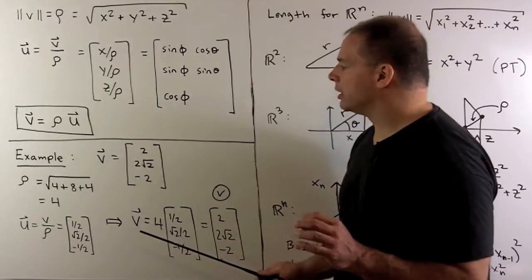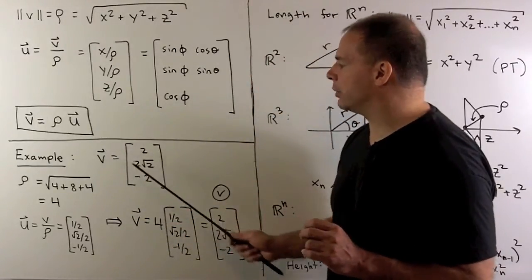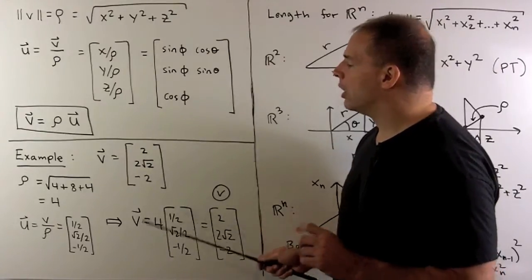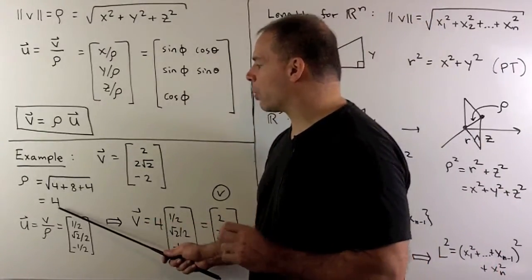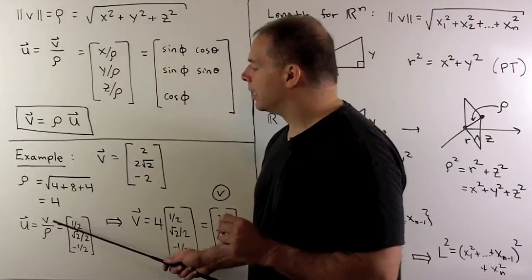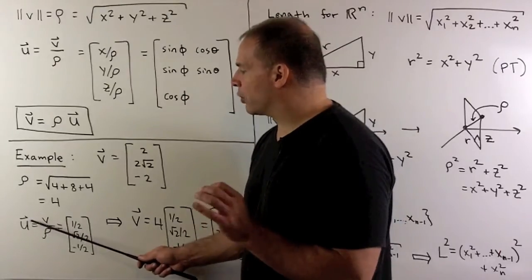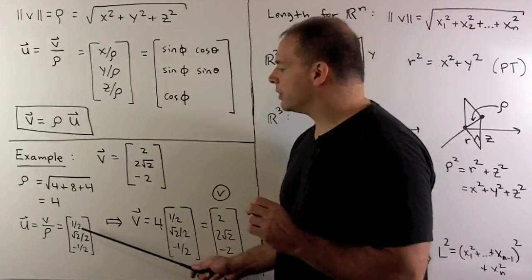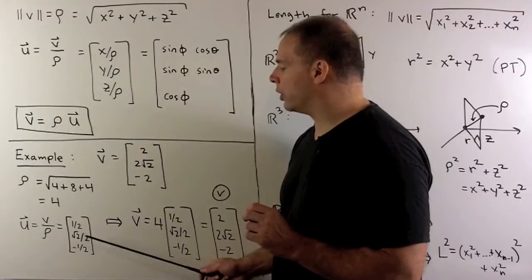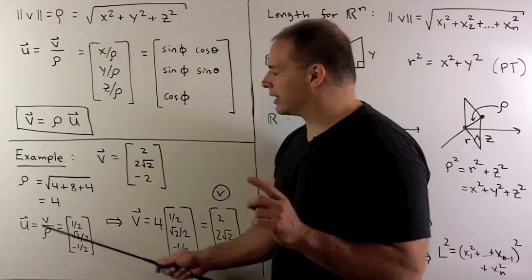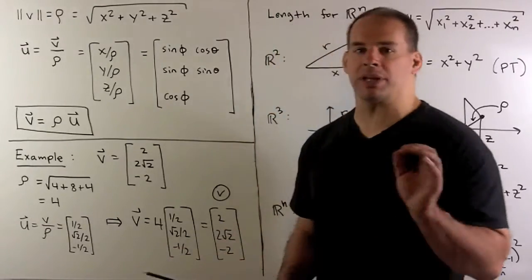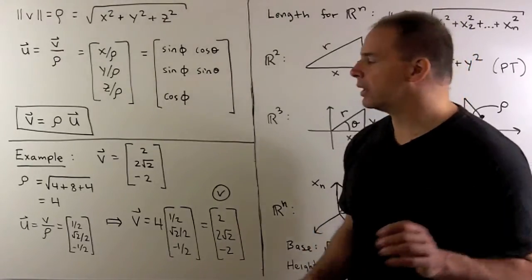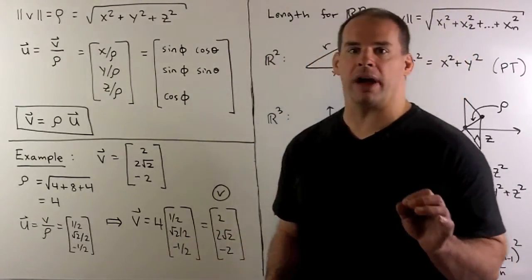For a concrete example, let v equal (2, 2√2, −2). Our rho in this case is going to be four. The unit vector in the same direction as v is going to be (1/2, √2/2, −1/2). If we take the length of u, we get one-fourth plus one-half plus one-fourth, which equals one. So u is, in fact, a unit vector.